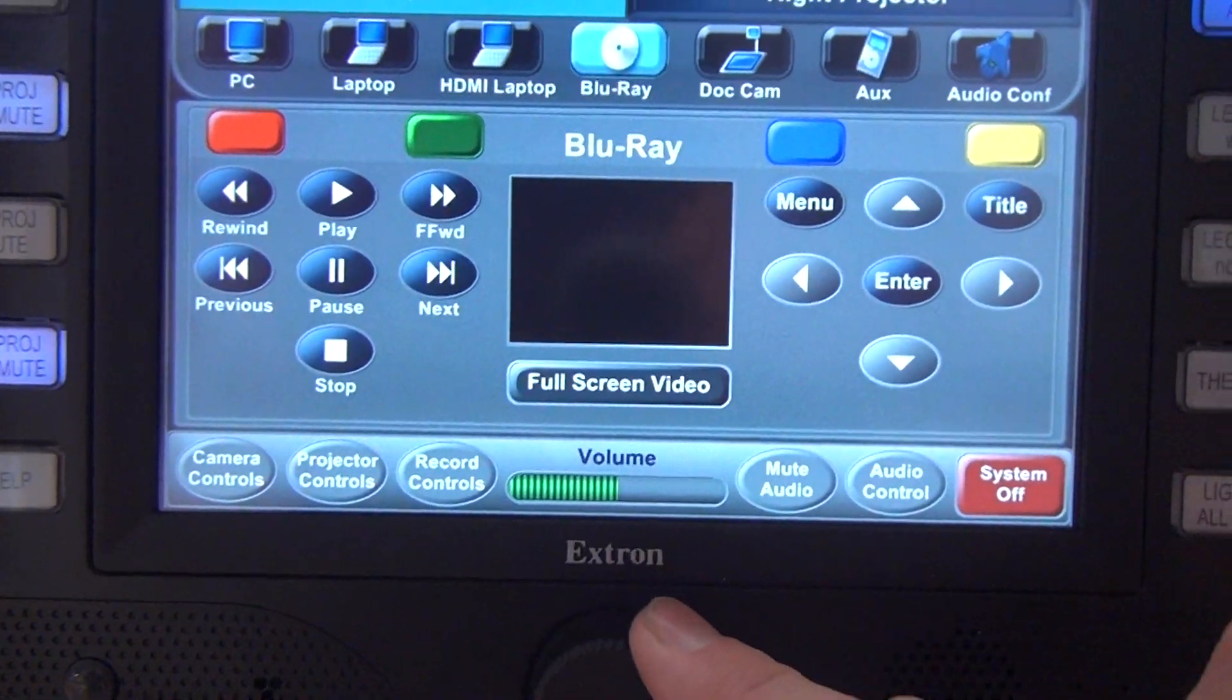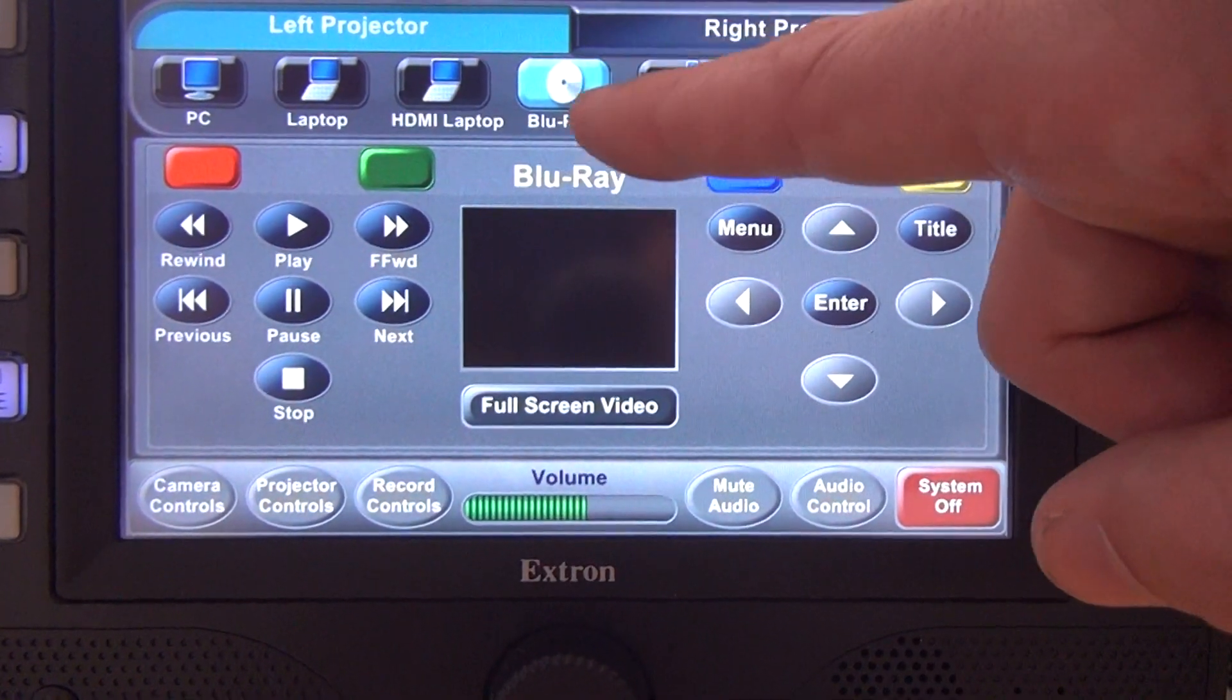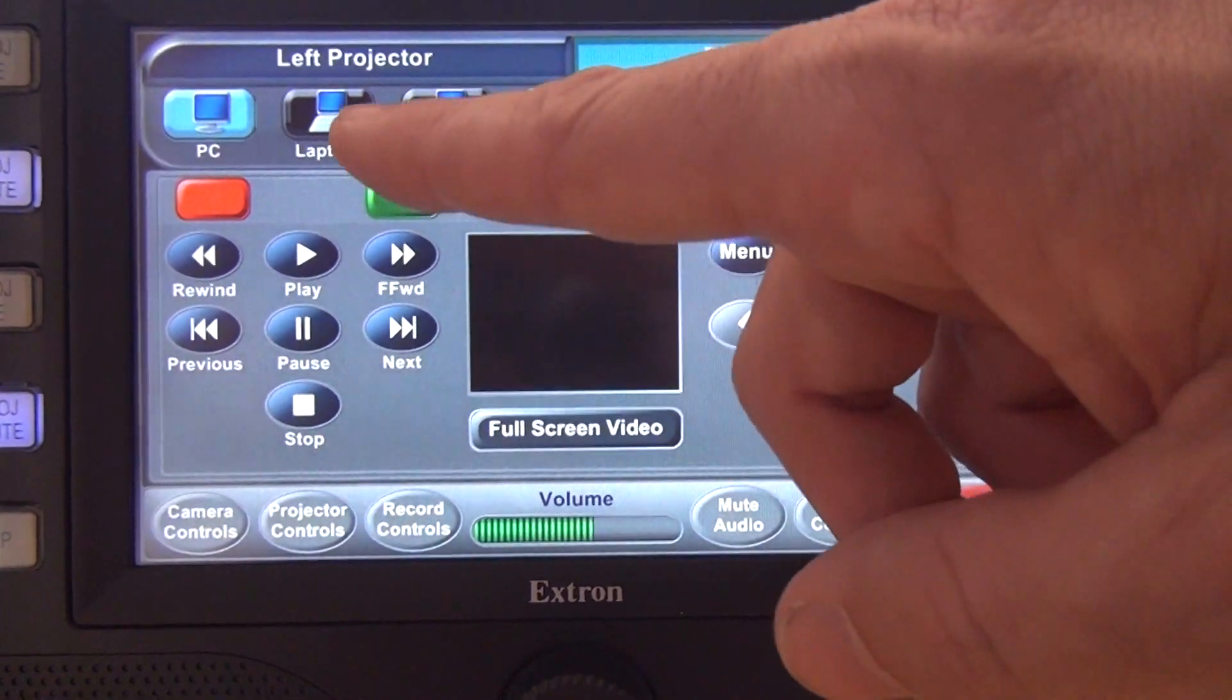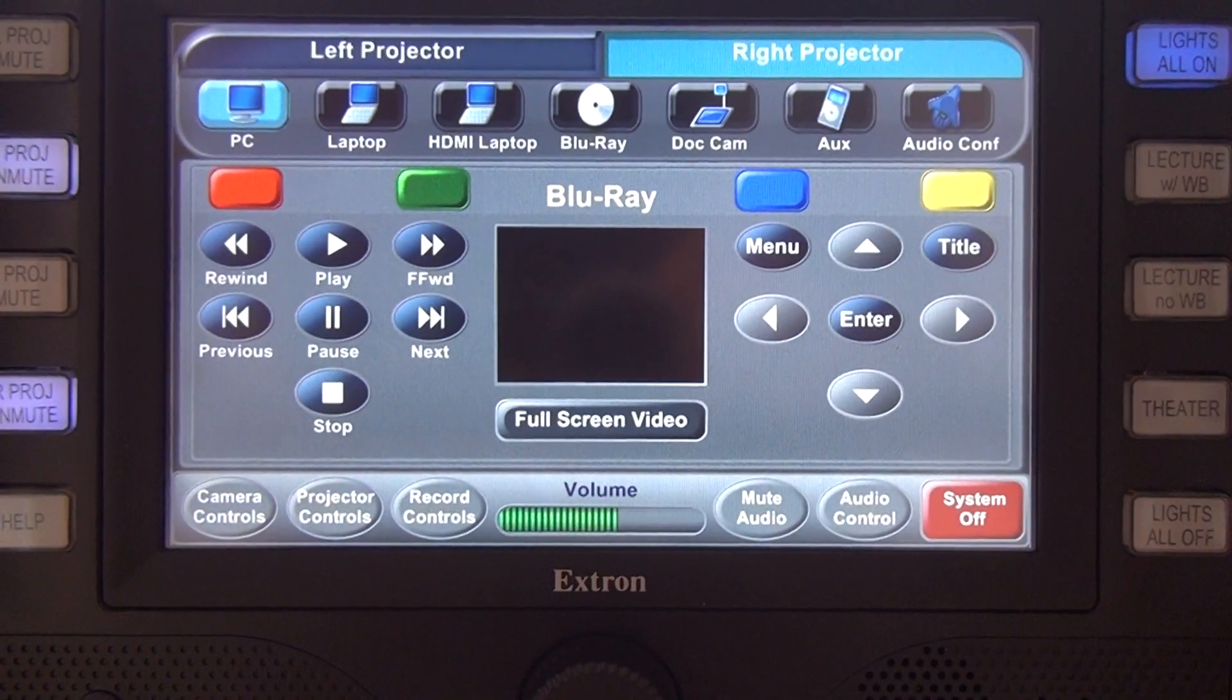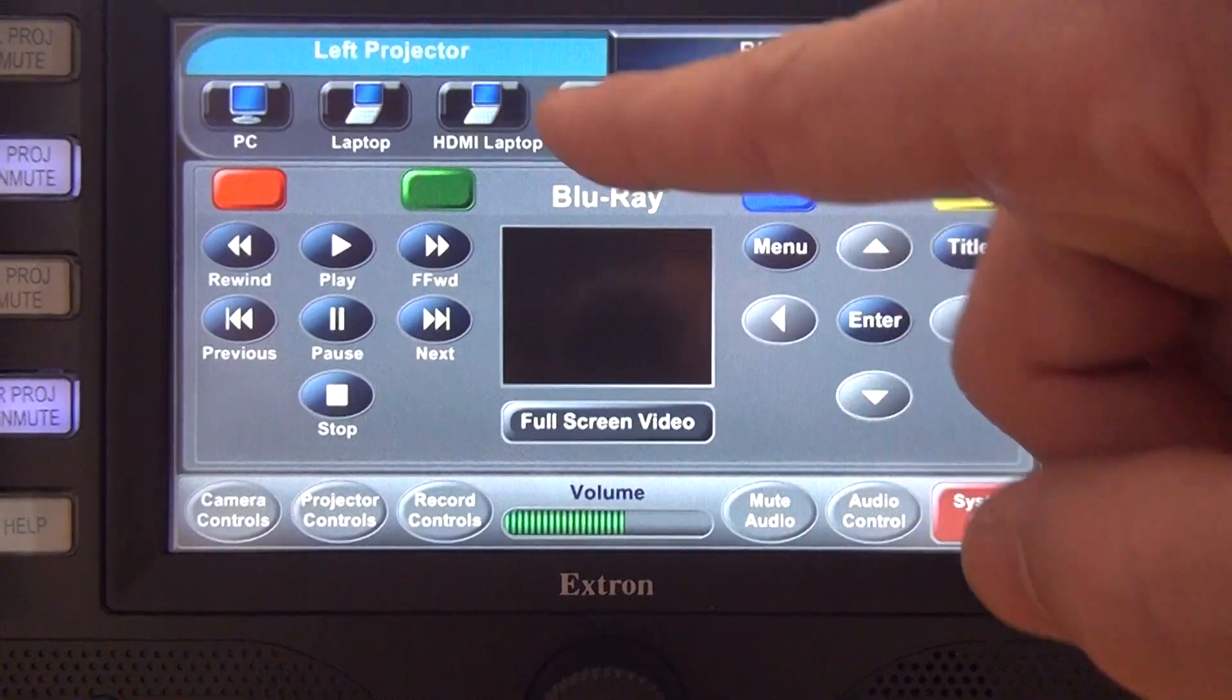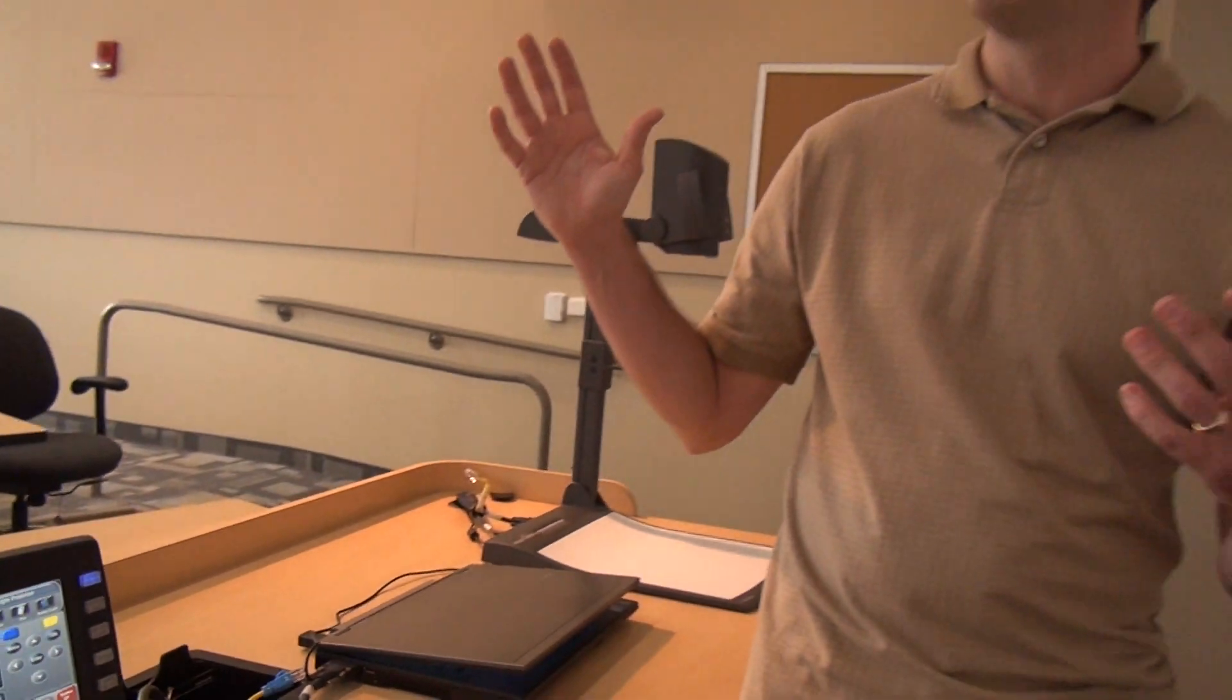Turn it left and right to turn it up and down. And a quick note: our blu-ray is selected on the left projector and our right projector still has PC on it, but the only audio we're going to hear is the audio from the blu-ray player. And the reason for that is it's only going to give the audio source of whatever the most recent button press was on the touch panel.